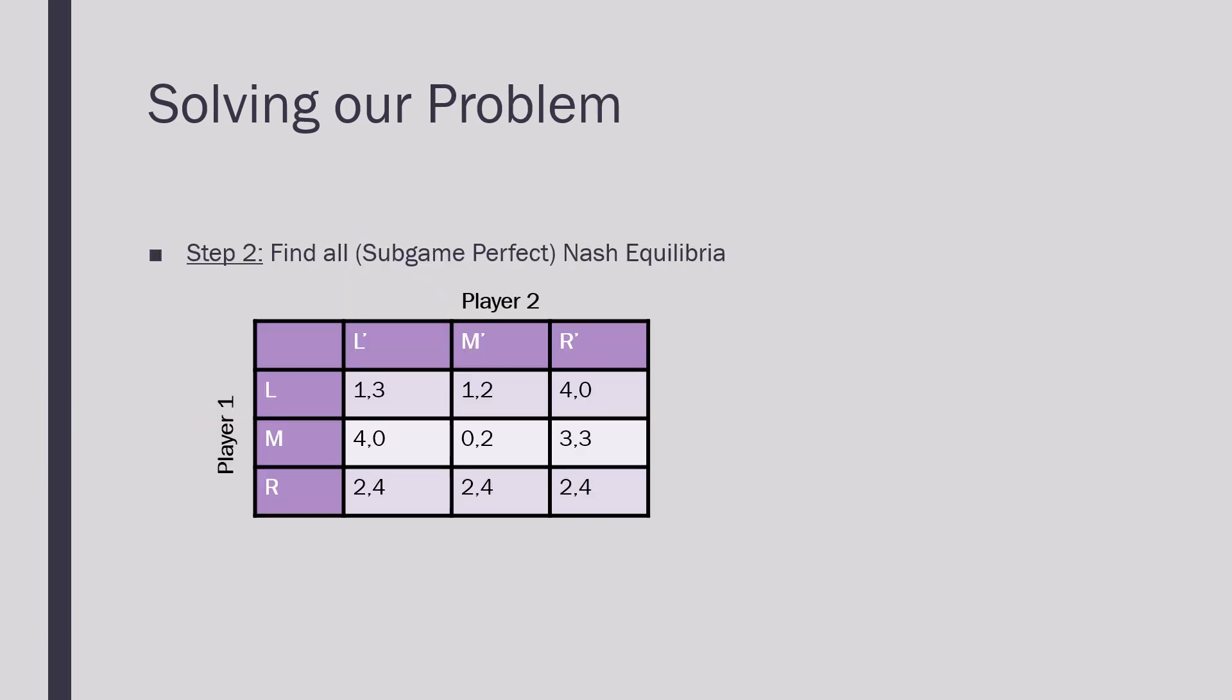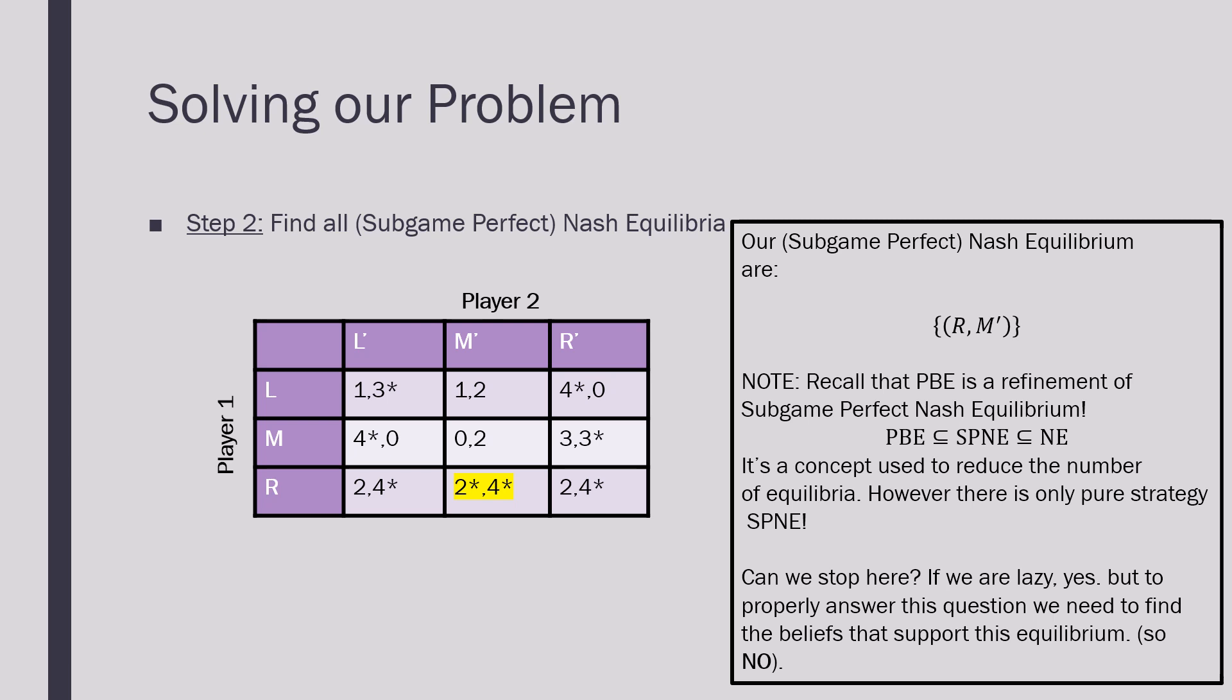We're then going to solve for all Subgame Perfect Nash Equilibria. Every Nash Equilibria that we're going to solve for here is going to be Subgame Perfect because in this game there is no proper subgame. Using the tick and cross algorithm, we find that our Subgame Perfect Nash Equilibrium is going to be where Player 1 is playing right and Player 2 is playing M.